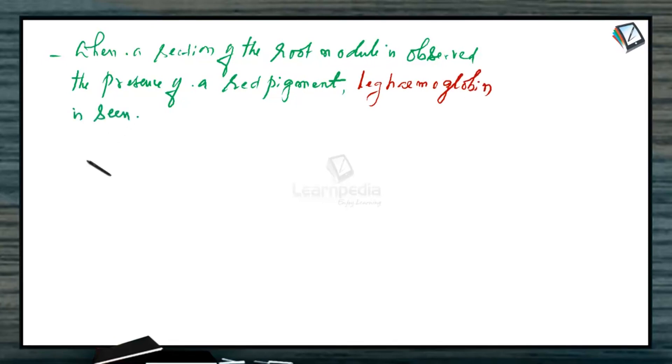When a section of the root nodule is observed, the presence of a red pigment, that is the leg hemoglobin, is seen. Leg hemoglobin is an oxygen scavenger.